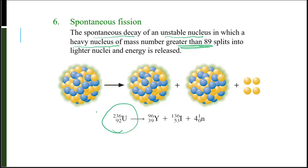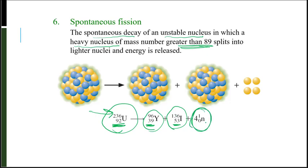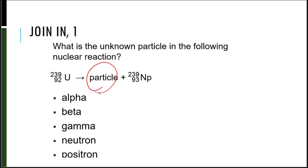Let's look at uranium-236. That's a heavy nucleus and it splits into yttrium and iodine in this case. If I were to add together both of those nuclei's protons, 39 plus 53 would add up to 92. But if I added up the masses of both of those, I would get 232. That means I need 4 neutrons to balance out that mass.